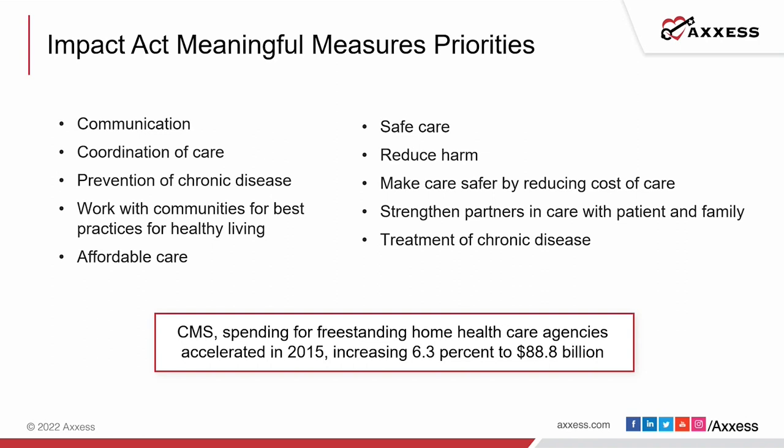We want affordable care. Medicare has been losing money and there are concerns about sustaining the program — they're already talking about a 7.8 percent reduction in payment, and when value-based purchasing takes full effect we'll really see the impact of how affordable our care has been. We want safe care, so our priorities in assessment and care planning should provide for safe care with a reduction in harm.